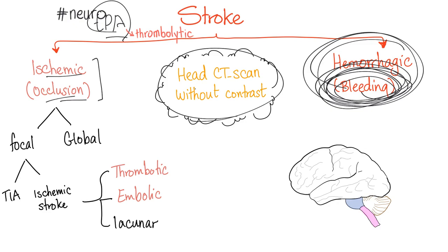Ischemic stroke due to occlusion is divided into focal and global. Focal means a specific location; global means many places. Focal is further divided into TIA and ischemic stroke. Ischemic stroke can be thrombotic, embolic, or lacunar. We'll discuss strokes in greater detail when we cover neurology.